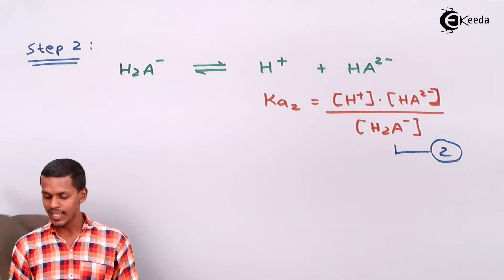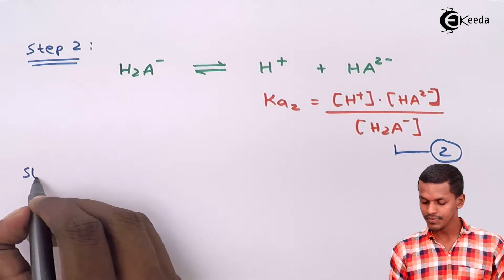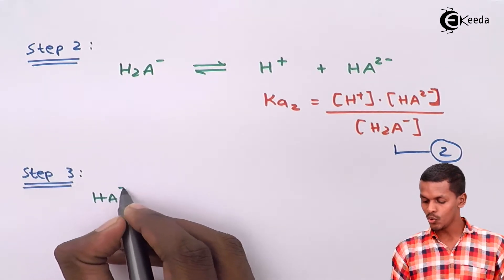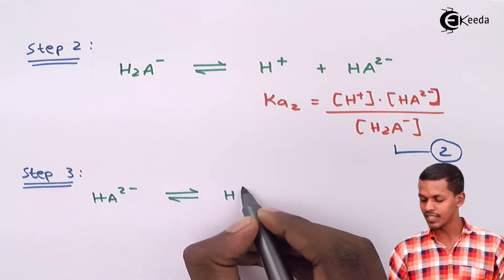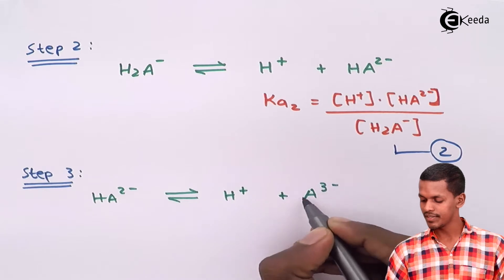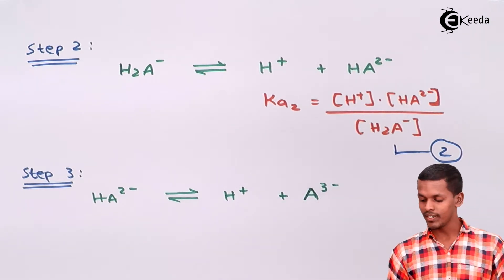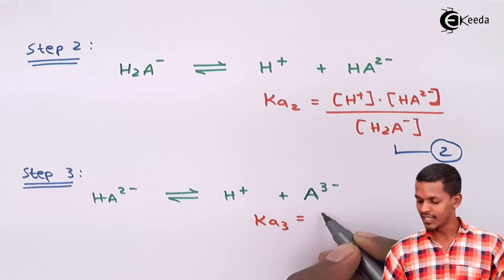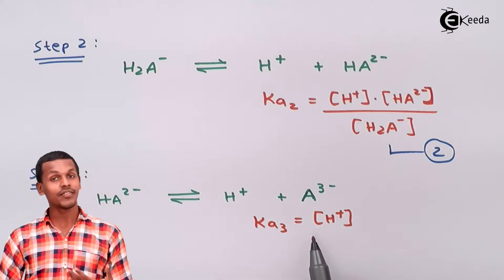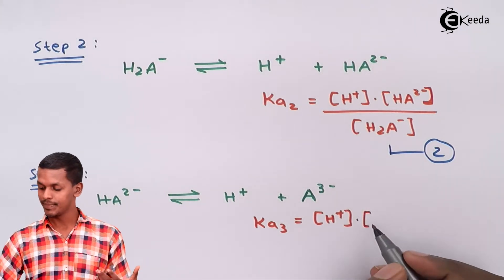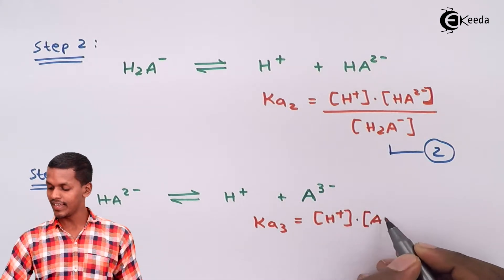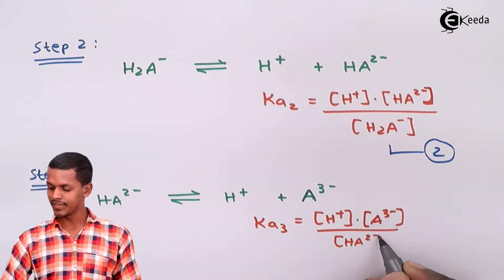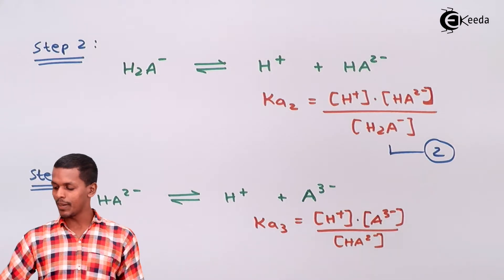In step three, HA2- dissociates to give H+ along with A3-. The dissociation constant KA3 equals [H+][A3-] divided by [HA2-]. This is equation three.